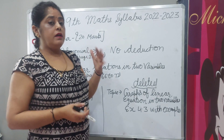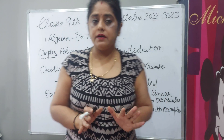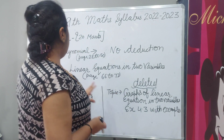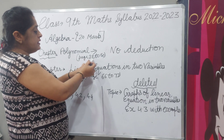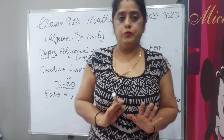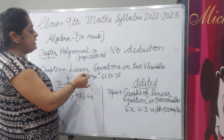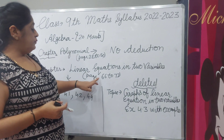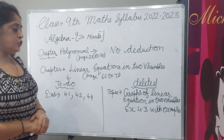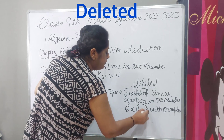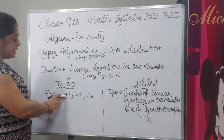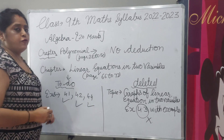Now I am telling about algebra. Algebra is 20 marks and the chapters are polynomials and linear equations in two variables. Polynomials is up to page number 28 to 50 and there is no deduction — full chapter you have to do. Chapter 3, linear equations in two variables, is up to page number 66 to 77. One topic deleted: graphs of linear equations in two variables, meaning exercise 4.3 is deleted. You have to do exercises 4.1, 4.2, and 4.4.